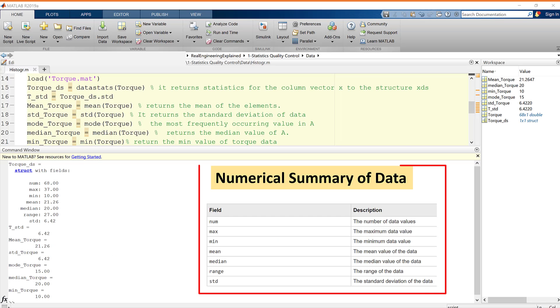Let's switch to MATLAB to see how easily we can get these numerical summaries from the torque data. Here, we load the torque data. With datastats function, we can get the numerical summary of data and then save in torque_s. Then, with this line of code, we can access the standard deviation of data. This line returns the mean of data, and this line returns the standard deviation of data. We can also get mode, median, mean, or max of the data.